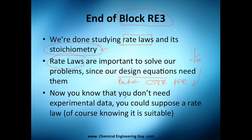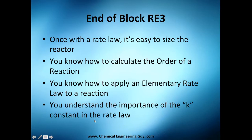If you don't have data you can apply rate laws and maybe you can get them. You don't need experimental data — you could also suppose a rate law and apply it, of course it needs to be suitable to that reaction. Once you have the rate law it's easy to size the reactor because with the rate law you get all the rate of reaction values for conversions.